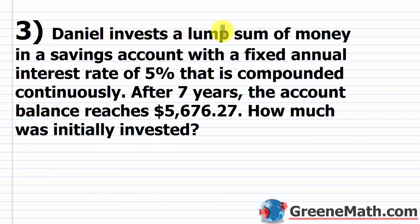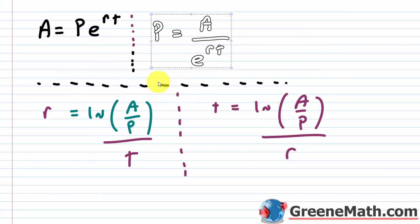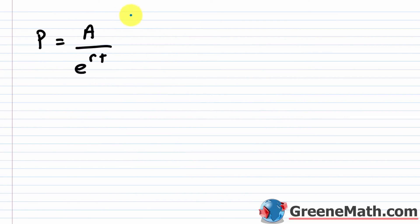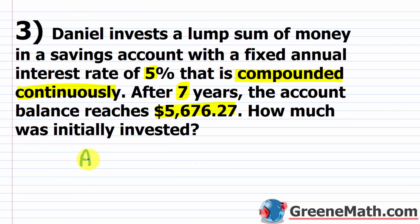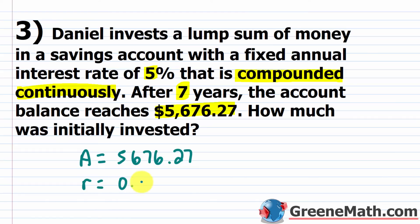For problem three, Daniel invests a lump sum of money in a savings account with a fixed annual interest rate of 5% compounded continuously. After seven years, the account balance reaches $5,676.27. How much was initially invested — in other words, what was the principal? We'll use the formula P equals A divided by e^(rt). A equals $5,676.27, r equals 0.05, and t equals 7.